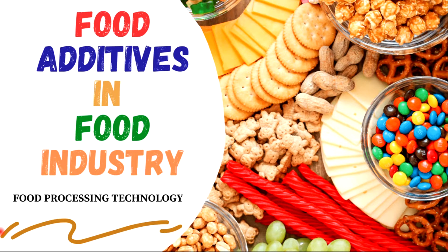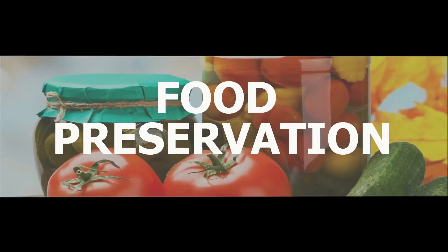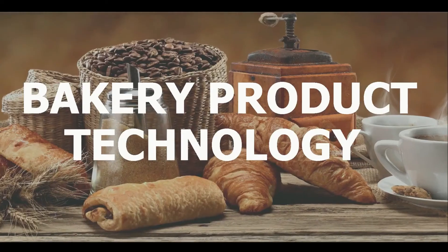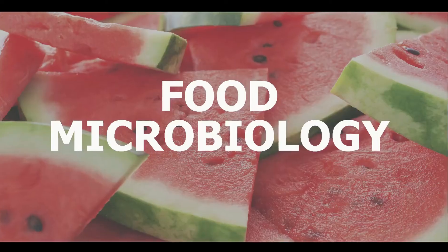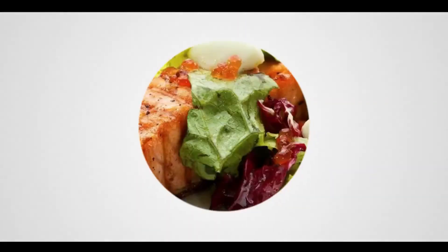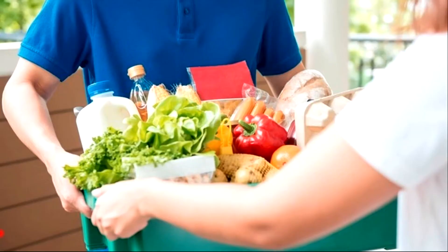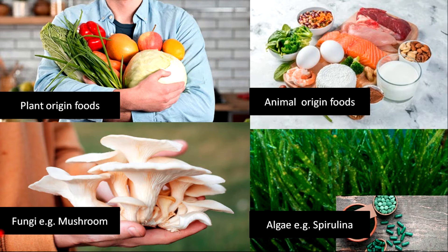Today we're going to talk about food additives in the food industry. Food is one of the main basic human requirements of life. It is sourced mainly from plants or animals, and there are also other minor sources such as fungi and algae. Mushroom is an example of fungi and spirulina is an example of algae.